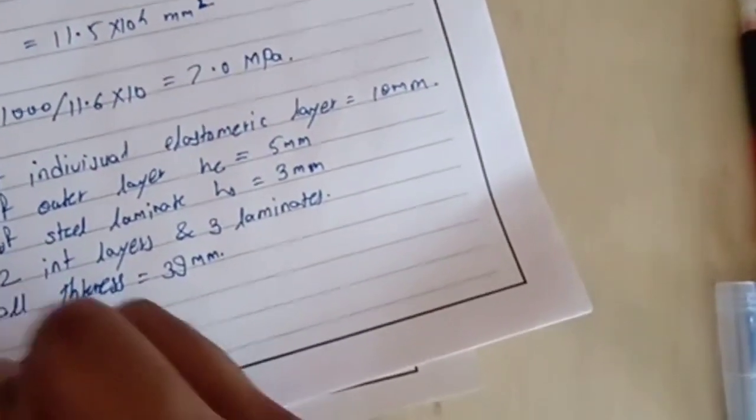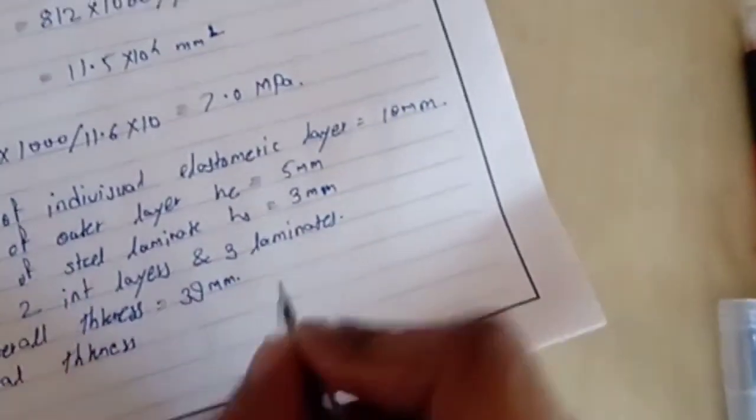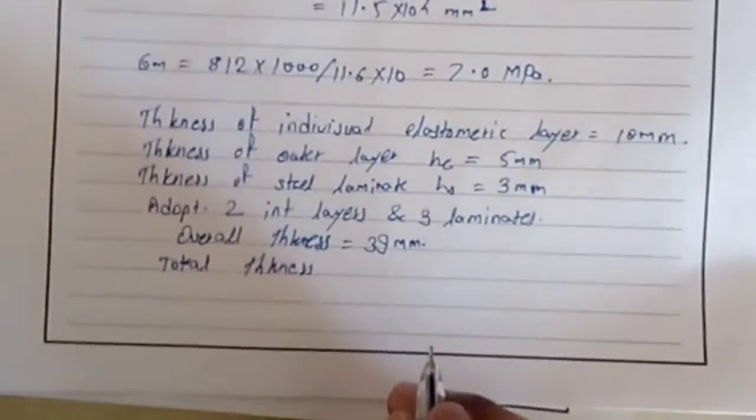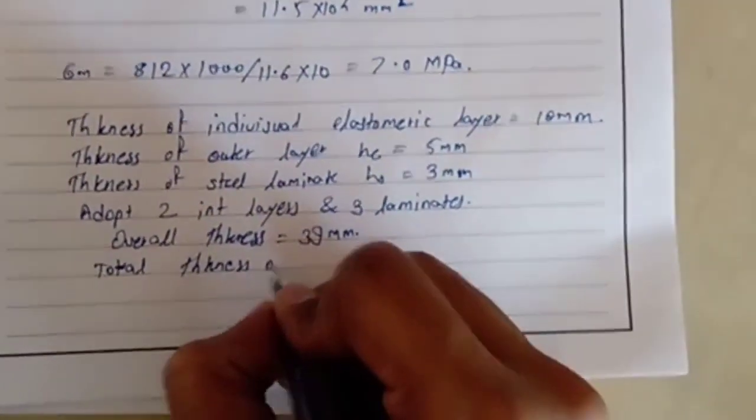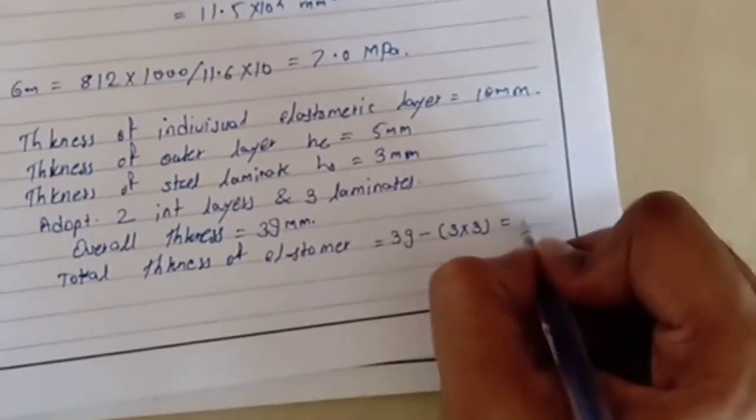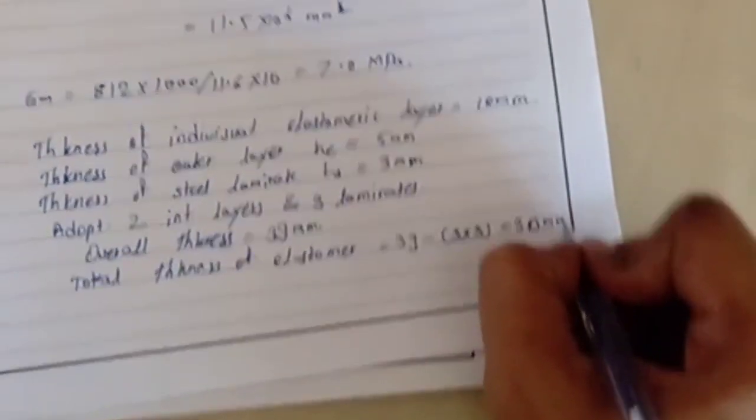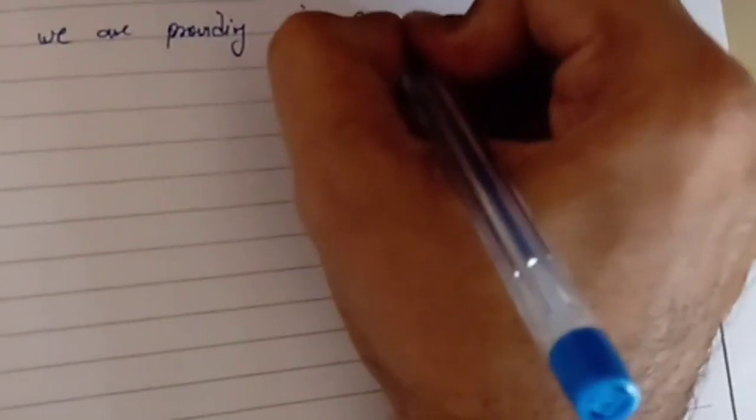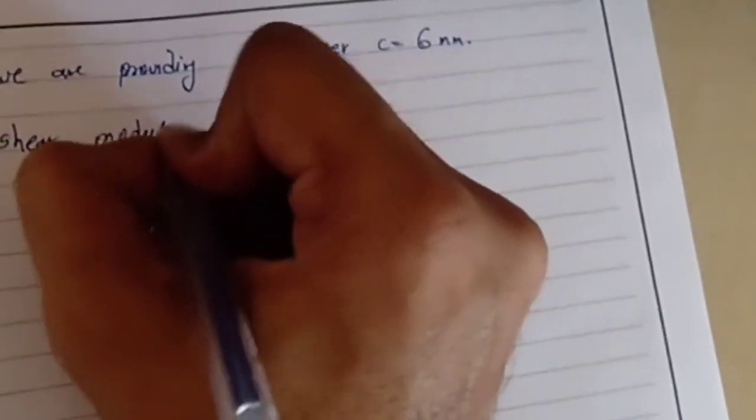Total thickness of elastomer in bearing: that is 39 mm minus these 3 steel laminates, 30 mm. We are providing side cover c of 6 mm. This is also given in the code. Now the shear modulus assumed, or might be given in the problem sometimes...